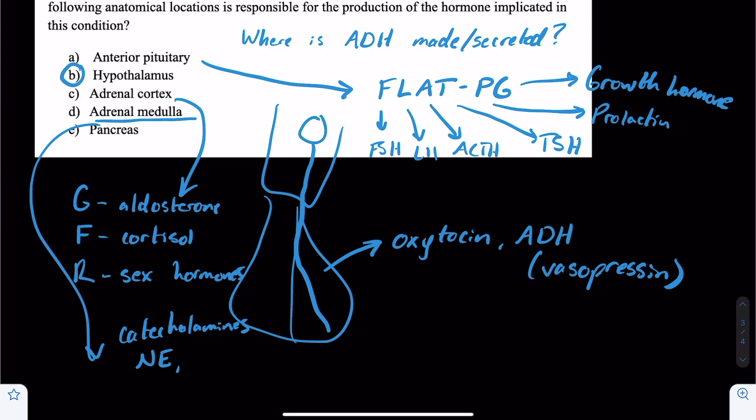So NE for short for norepinephrine, E for epinephrine, and dopamine. And then our pancreas. What hormones is that going to secrete? Three major ones. In our alpha islet cells, that's going to be glucagon. That's going to raise our blood sugar. In our beta islet cells, that's going to be insulin. That's going to lower our blood sugar. And in our delta cells, a little bit lower yield, somatostatin.